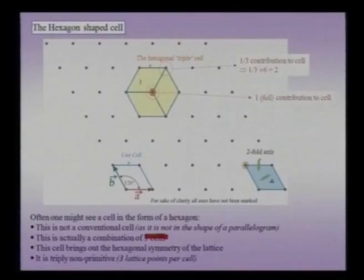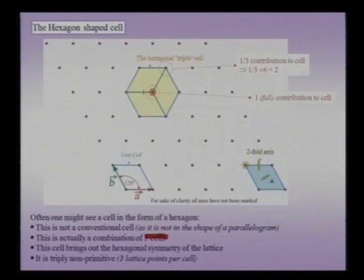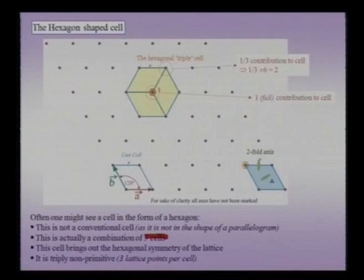The importance of this hexagonal cell comes into picture when we want to understand hexagonal symmetry — this cell has hexagonal symmetry, which the smaller primitive unit cell lacks. To summarize: the hexagonal-shape cell often shown in textbooks is chosen to illustrate the 6-fold symmetry of this lattice. We must be clear that this is not a conventional unit cell — it is triply non-primitive, three times the area of the primitive cell, with three times the lattice point content.